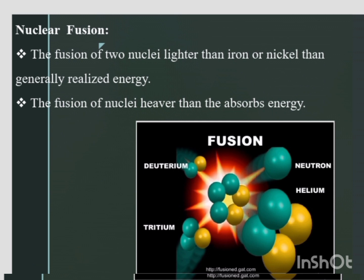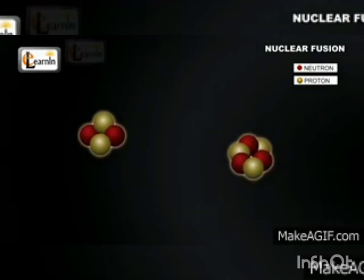Next, nuclear fusion. In this process, two or more light nuclei combine together to form a single heavy nucleus. For example, when four hydrogen nuclei are fused together, a helium nucleus is formed. Next, we will look at the animation video of nuclear fusion.